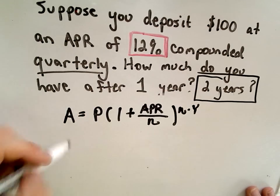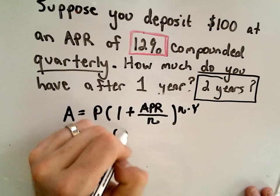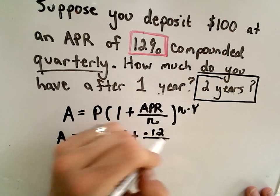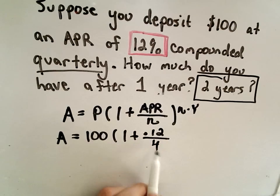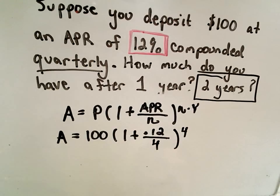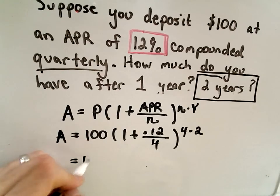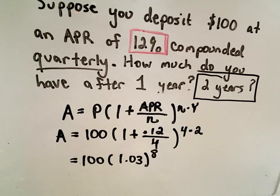So it says the amount accumulated will be our principal of $100, 1 plus our APR, which is 12%, or 0.12, divided by the number of compoundings, which is 4. Again, the same number of compoundings times the number of years, which will be 2. So it says now we just have to compute 100 times 1.03 raised to the eighth power.